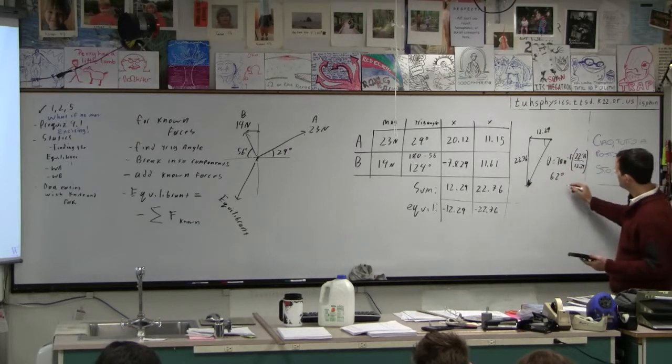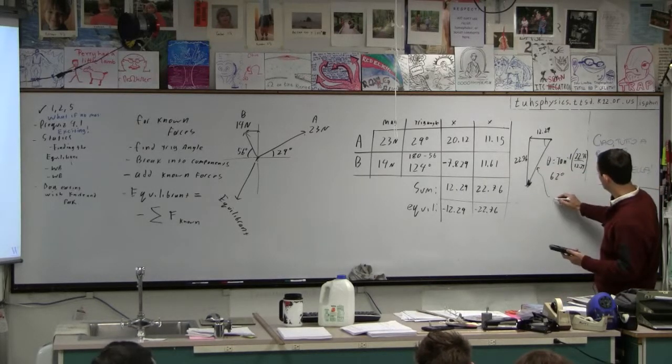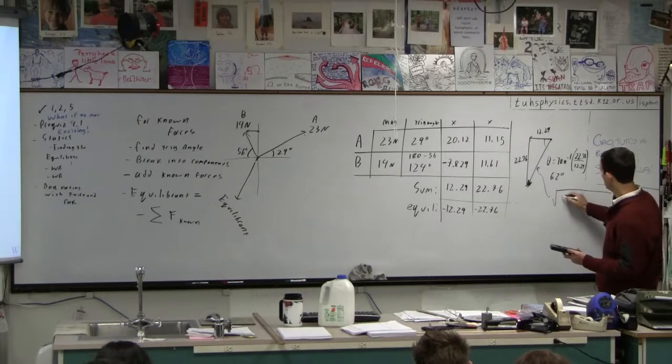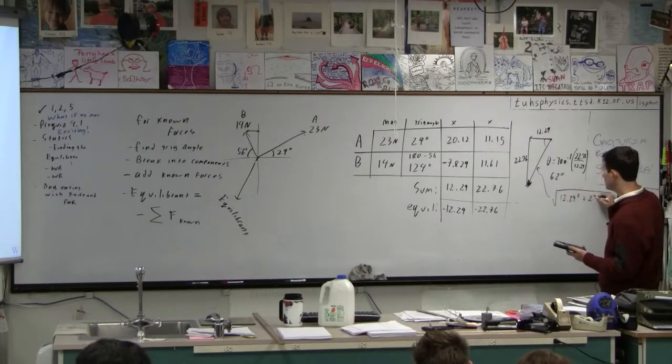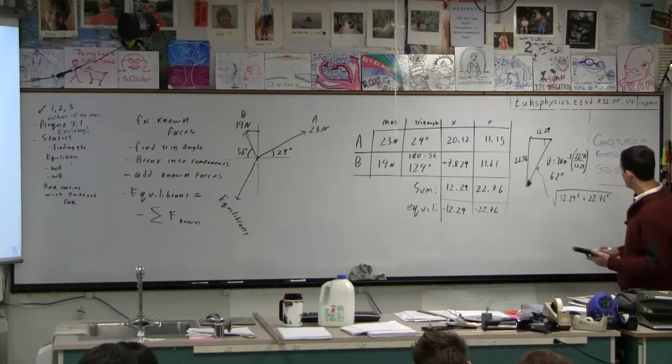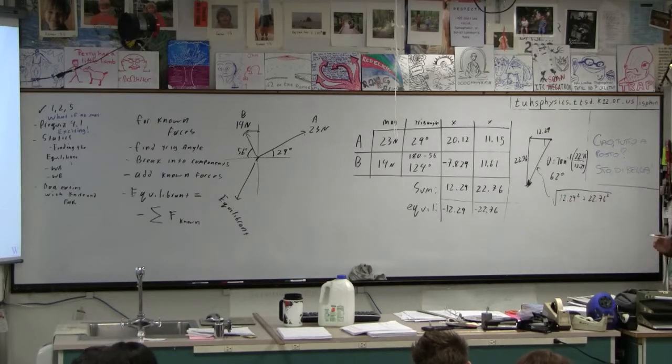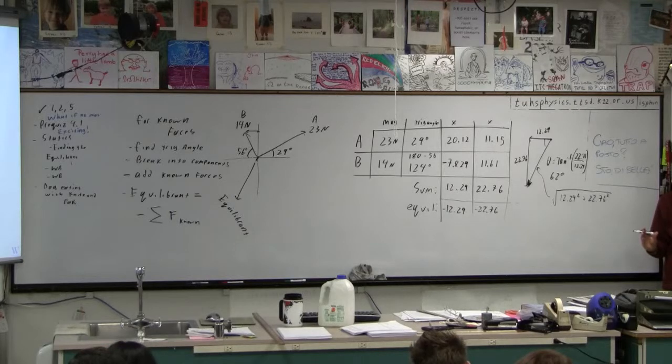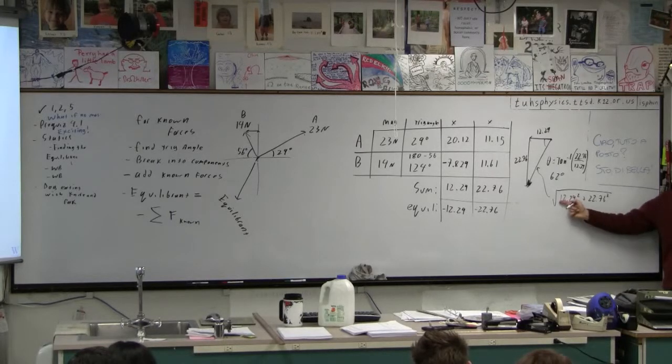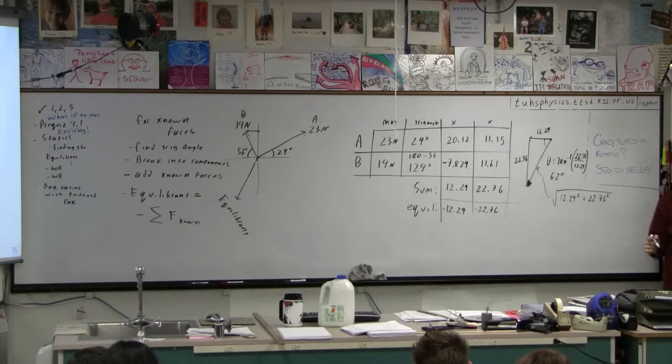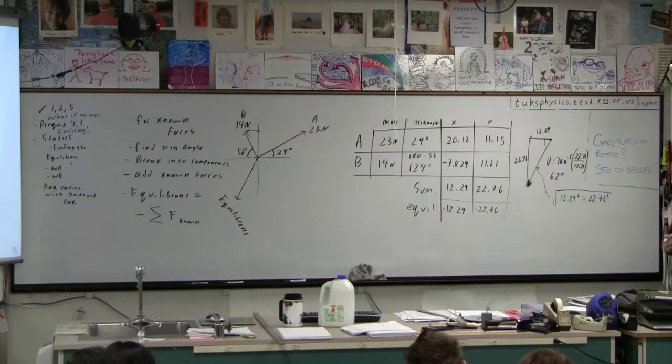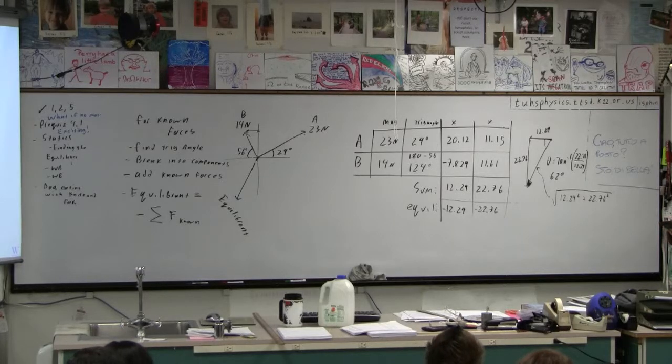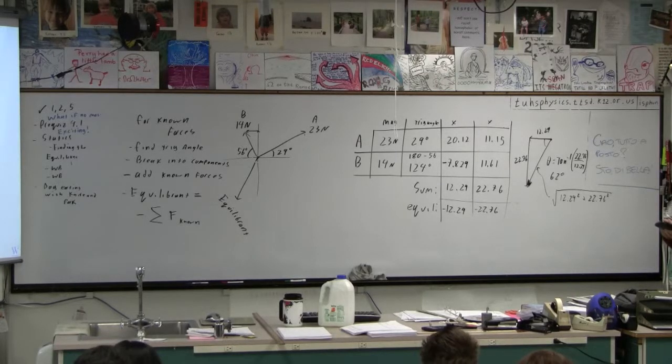And then the magnitude of the equilibrant is the square root of 12.29 squared plus 22.76 squared. Again, be very careful. You know that a negative number squared is a positive number. So don't put the negatives in there, especially if you have a TI calculator, because you've got to be very careful the way you do it. You've got to put it in parentheses, and it's just way too much work for something you already know the answer to. Alpha K squared plus alpha L squared.